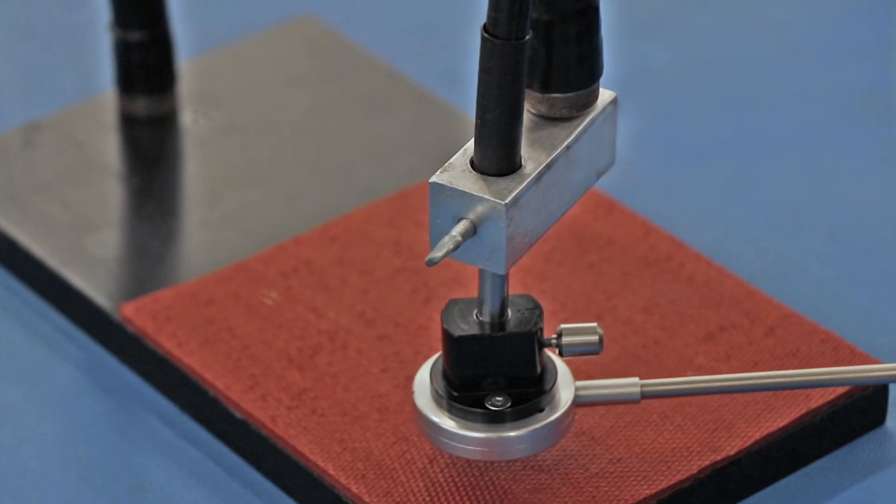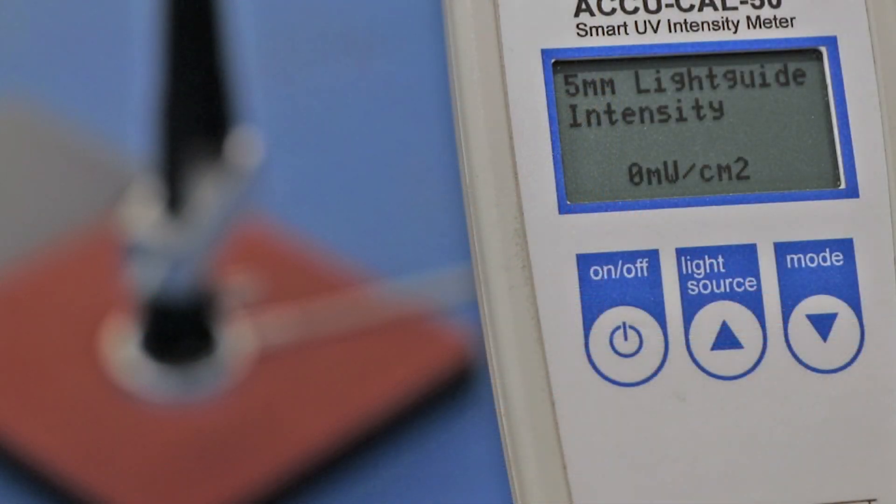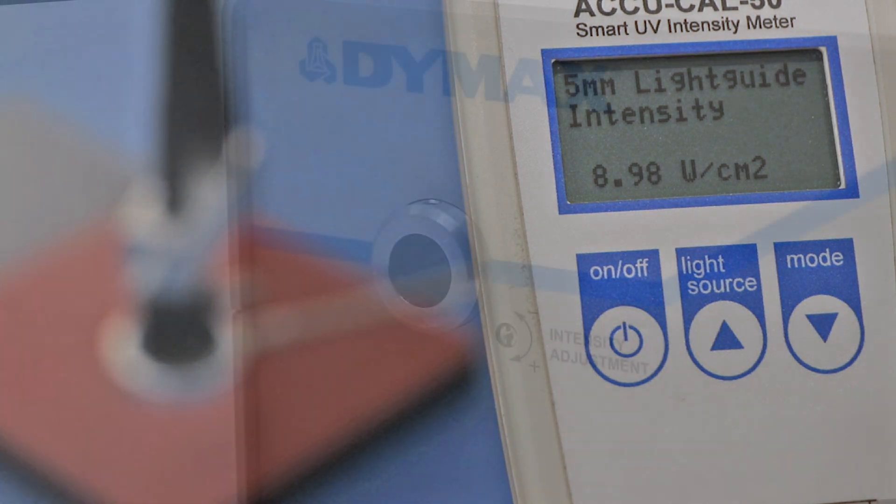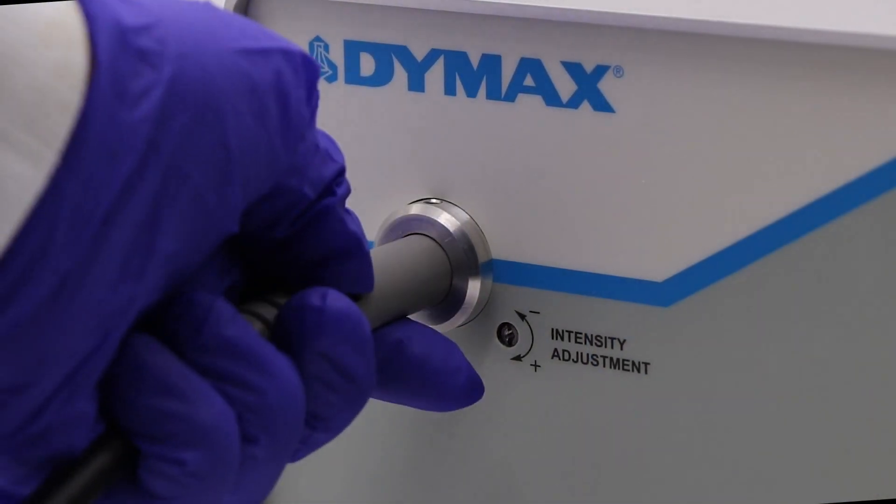Once the light guide is clean, obtain a UV reading at the end of the light guide with a radiometer. An acceptable reading indicates that the cleaning was successful. If sufficient improvement isn't obtained, ensure that the light guide is fully seated and repeat the measurement.